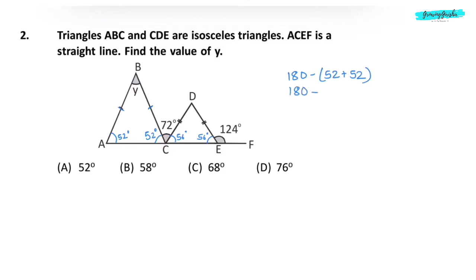Now, we can easily find the value of Y. 180 minus 52 plus 52, 180 minus 104, it is equal to 76 degrees. So Y here is 76 degrees. Correct answer is option D.